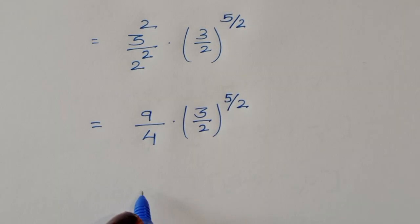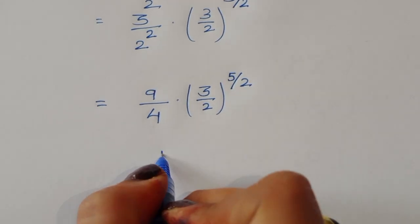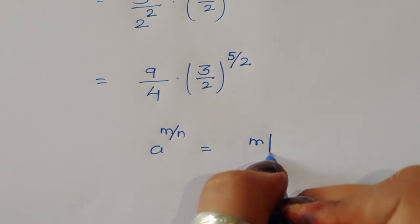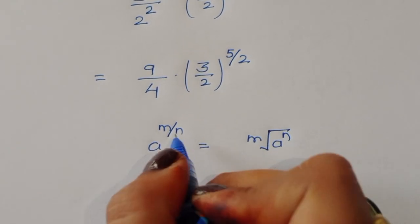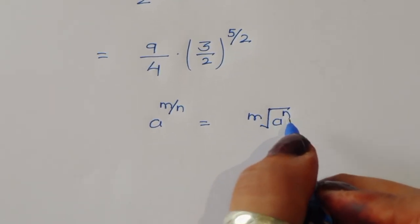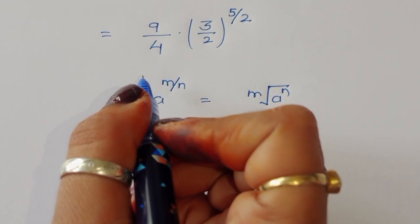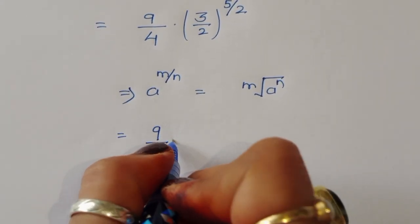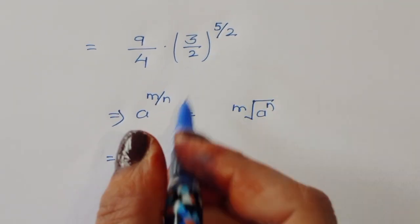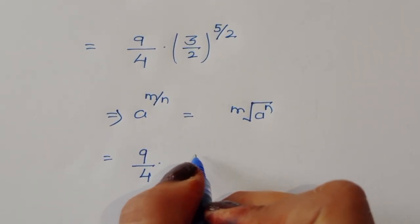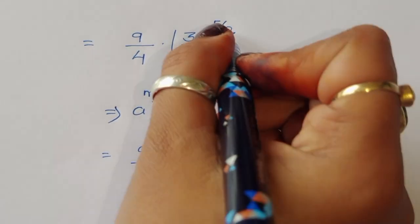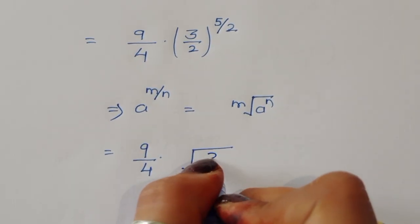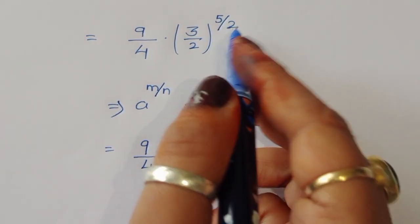Now we can write: if a^(m/n) is given, we can write this as the n-th root of a^m. Using this formula, 9 upon 4 times 9 upon 4 times... this will come under the square root because the denominator is 2. So we write (3/2) square root of (3/2)^5.